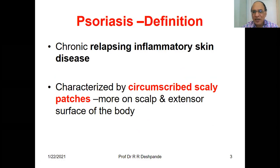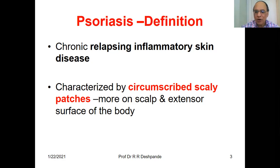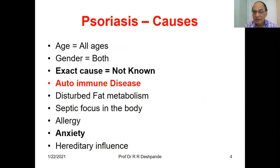What is the definition of psoriasis? This is a chronic but relapsing, again and again, inflammatory skin disease. It is characterized by circumscribed scaly patches, more on the scalp and extensor surfaces of your body. There are different causes, but unfortunately the exact cause is not known by dermatological study.